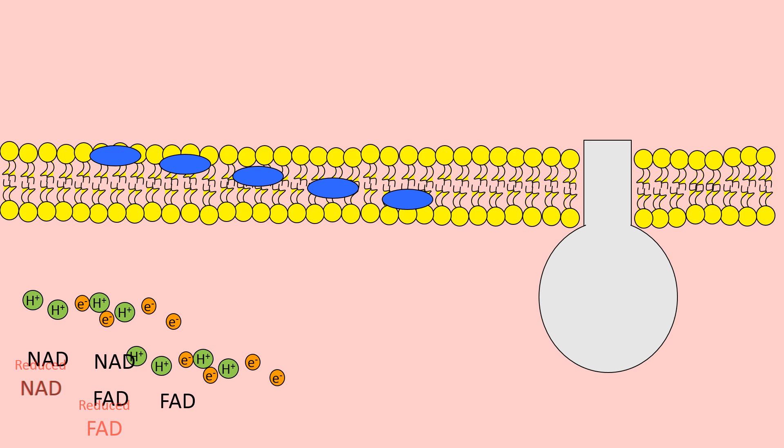We generate quite a lot. Now we've got all these electrons and protons. One thing to note here is that the inner membrane of the mitochondria is impermeable to these protons, so they're now stored up inside the matrix.